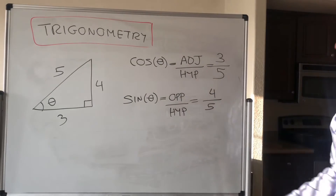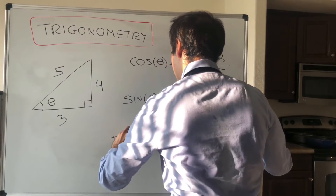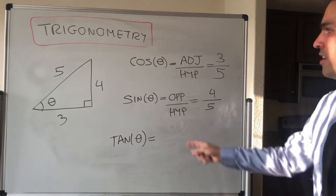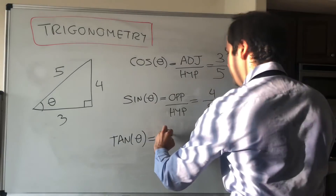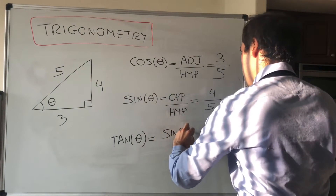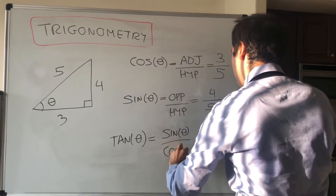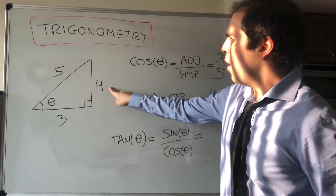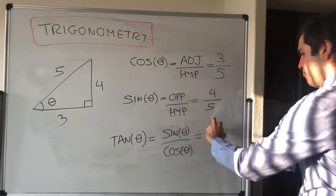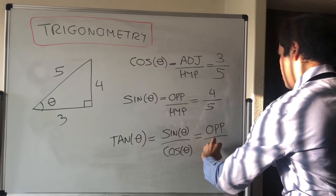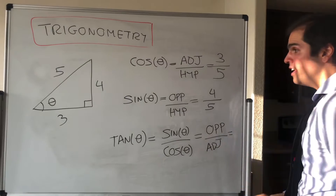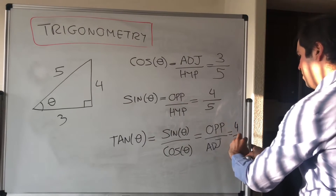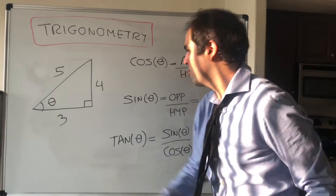And then there's tangent. There are two ways of thinking about this: either think of it as sine over cosine, or in this case it is also opposite over adjacent. Either way, it should give you 4/3.